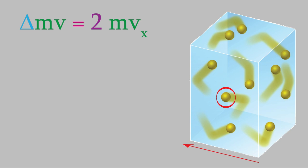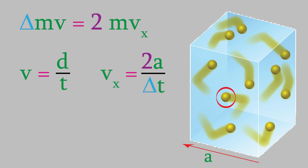To find out, we can use the general formula for velocity: velocity equals distance traveled over time. Suppose the length of the box along the x axis is called a. A molecule that hits the back wall will have to travel all the way across the box and back again before it hits the wall a second time — a distance of 2a. Using that for the distance in our velocity equation and solving for time, the time between collisions of a particle with the back wall is 2a over vx.